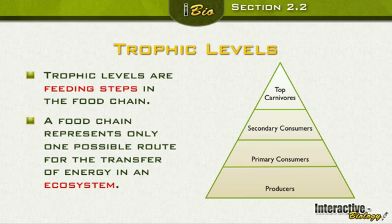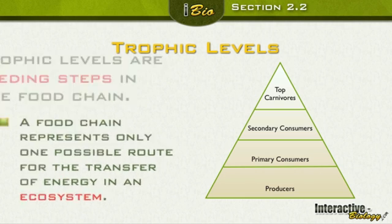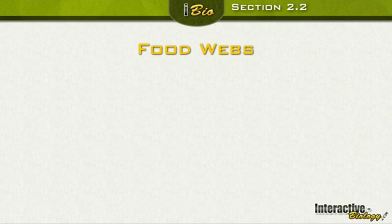But that's just one possibility. In nature, there's not just one food chain that you see. You have all kinds of different relationships, and we have something that's a little more complex than a food chain, and we call that a food web.